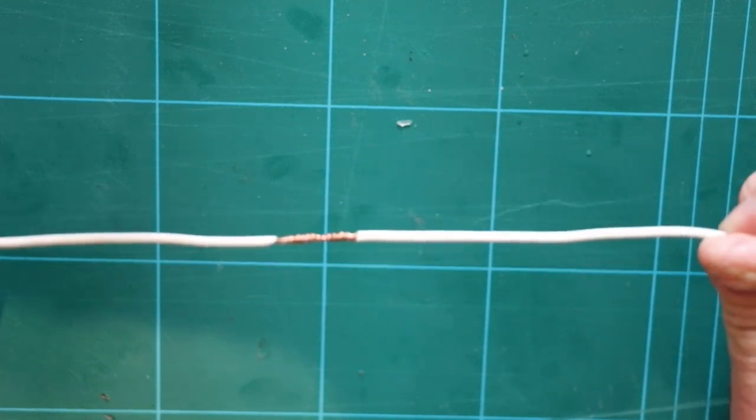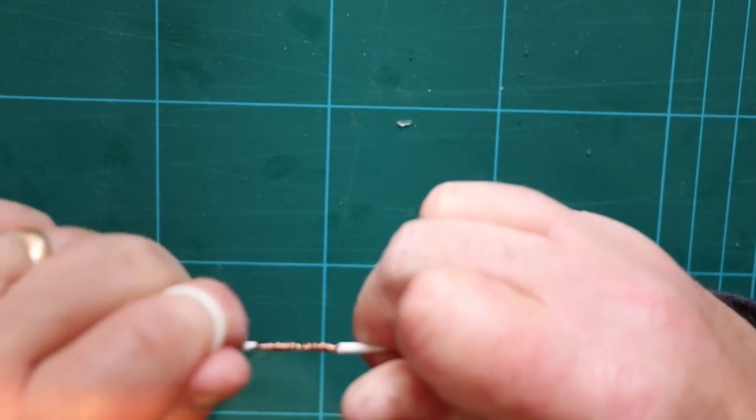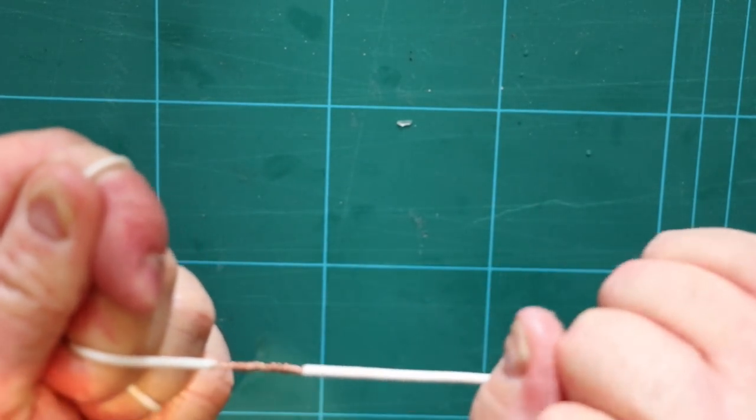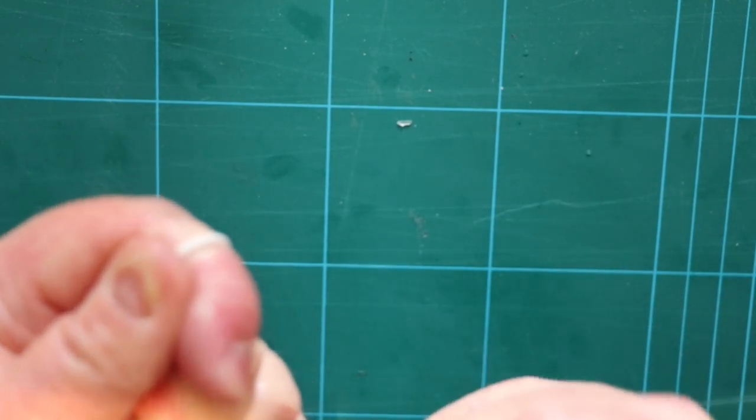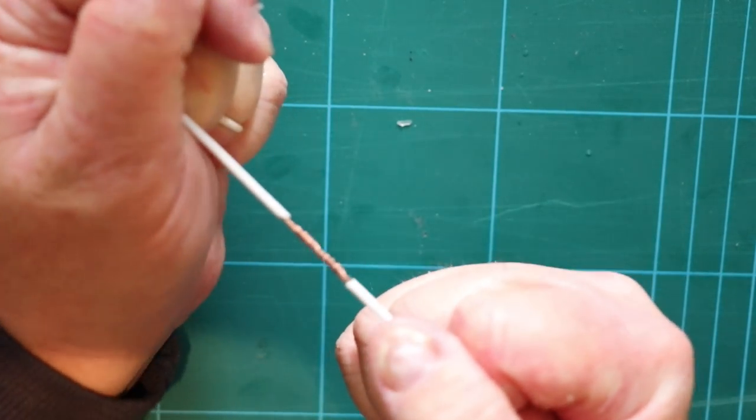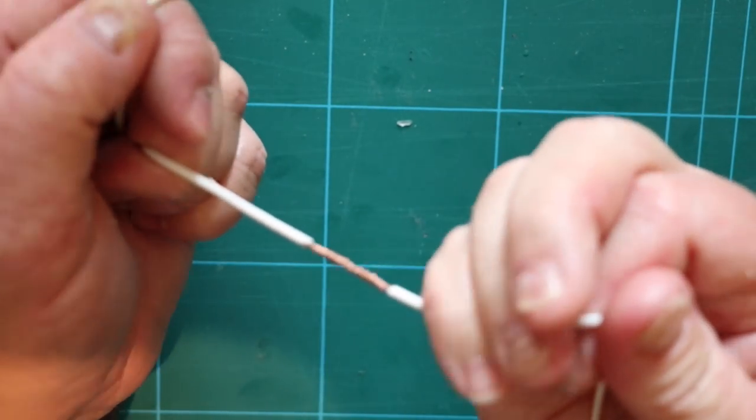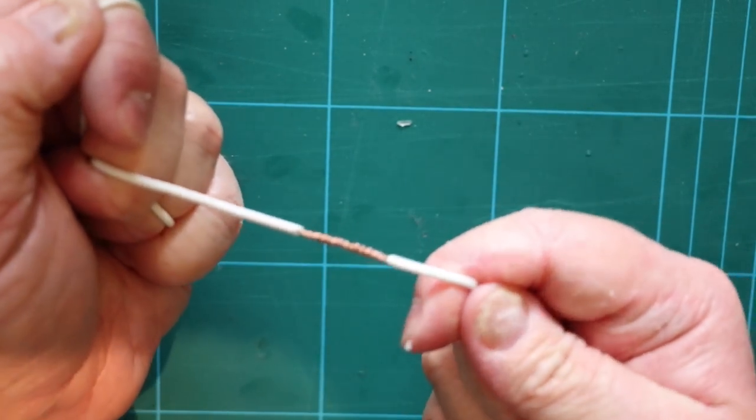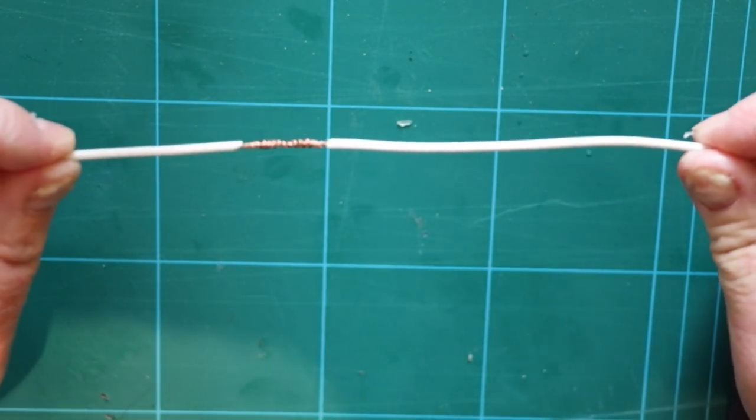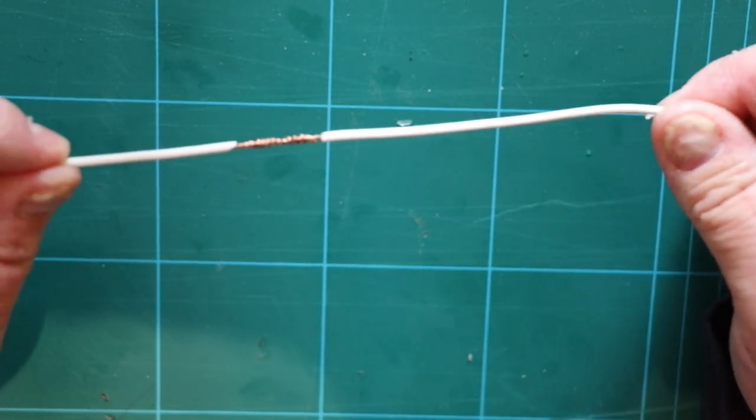It is unbelievably strong. If I now try and pull this apart, believe me I am trying here, I cannot pull that apart. Because the fact is this: if you pull it, it actually makes that tighter. So that's a Western Union splice. You can see it's really, really effective. All we need to do now is put some tape around that, and that is an excellent temporary join.